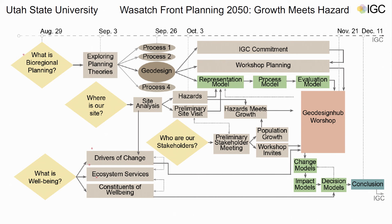Bioregional planning focuses just as equally on humans and non-human systems, whereas much of the planning we see today is largely focused on human systems. We tried to address some of the key issues that planners and designers focus on, which is well-being. Have any of you heard of the Millennium Ecosystem Assessment? There was one in 2005.